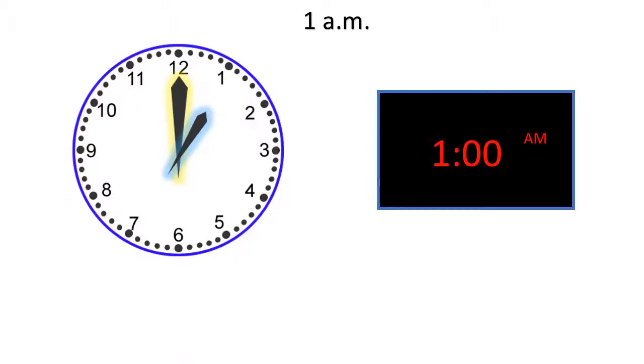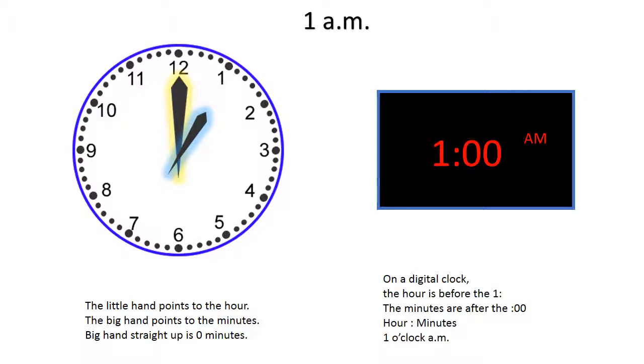1 a.m. The little hand points to the hour. The big hand points to the minutes. The big hand straight up is 0 minutes. On a digital clock, the hour is before the colon. The minutes are after the colon. Hour, colon, minutes.